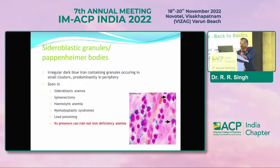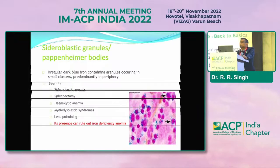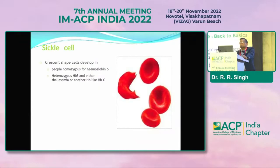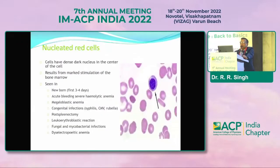Sideroblastic granules are seen after repeated transfusions in patients of hemolytic anemia and thalassemia, and also in lead poisoning. Sickle cells are well known: patients with sickle cell anemia have the least chances of malaria because the parasite does not survive in this kind of RBC. Patients are homozygous for hemoglobin S or heterozygous for hemoglobin S combined with other thalassemias.